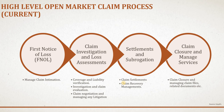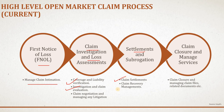Now let's talk about the current high-level open market claim process. The current process is very straightforward. The broker will submit the first notice of loss (FNOL), managing the claim initiation and providing all relevant claim information. The second step is claim investigation and loss assessment, where the managing agent or syndicate performs coverage and liability verification, investigation, claim evaluation, and manages any litigation. The third step is settlement and subrogation, where the real settlement process happens — the managing agent disperses the claim through STFO, and if there is any recovery possibility, the recovery management process will trigger.